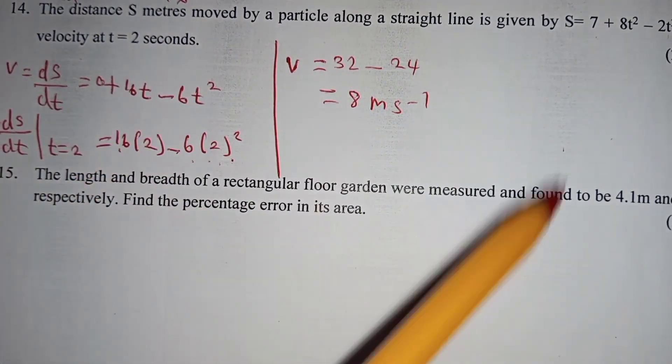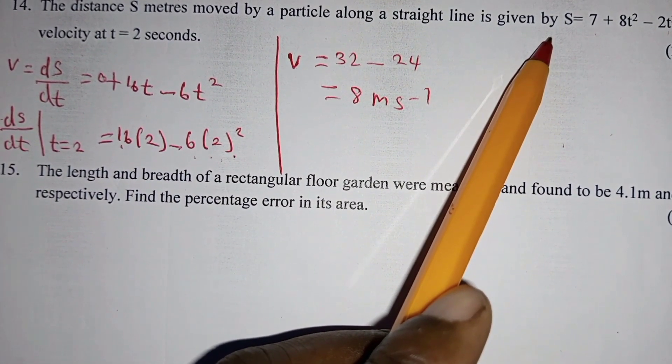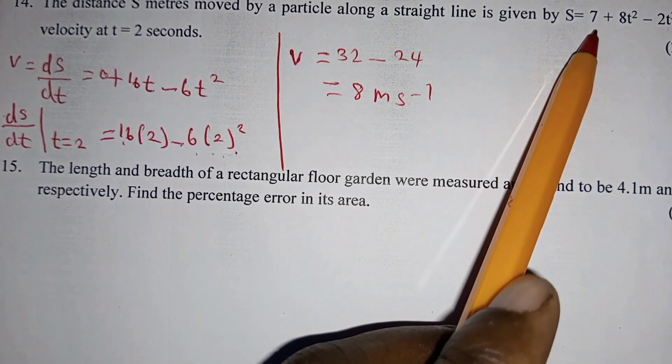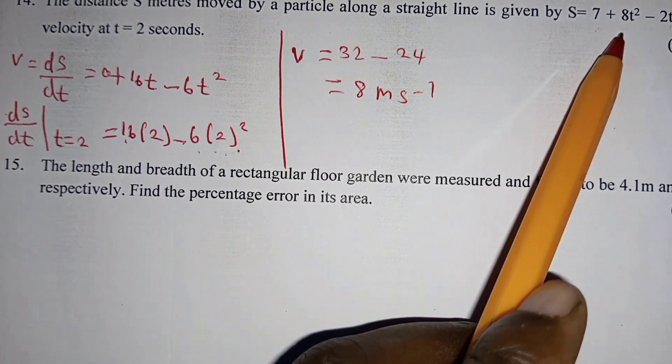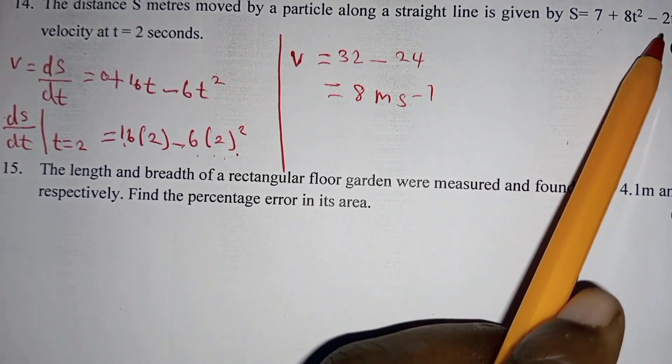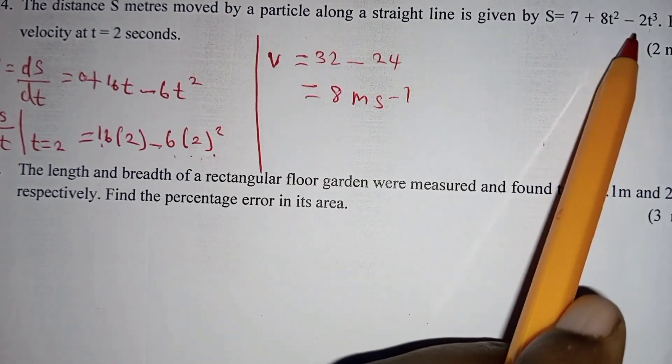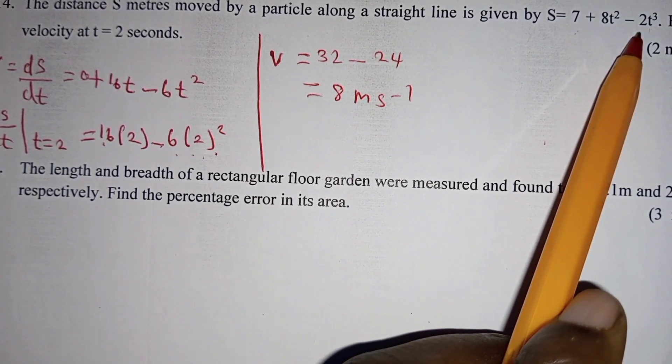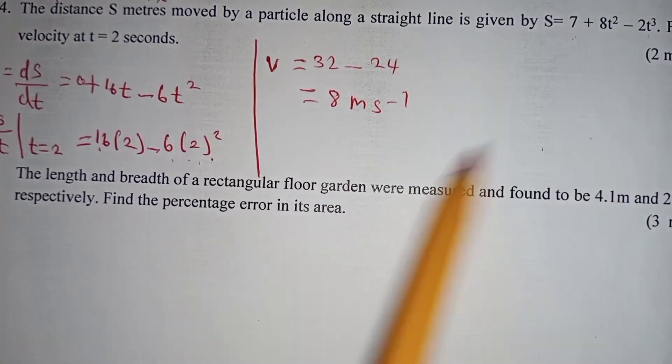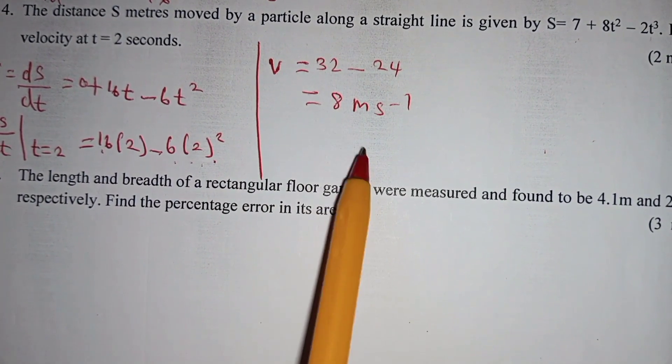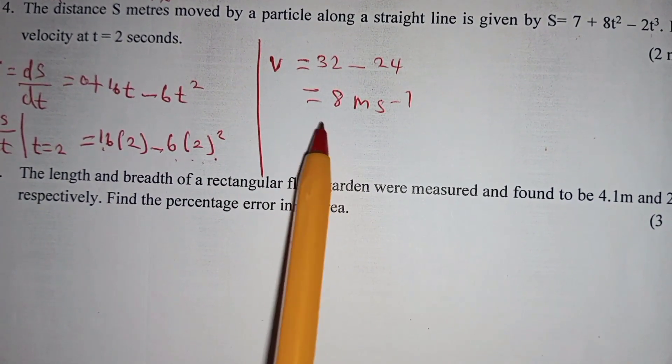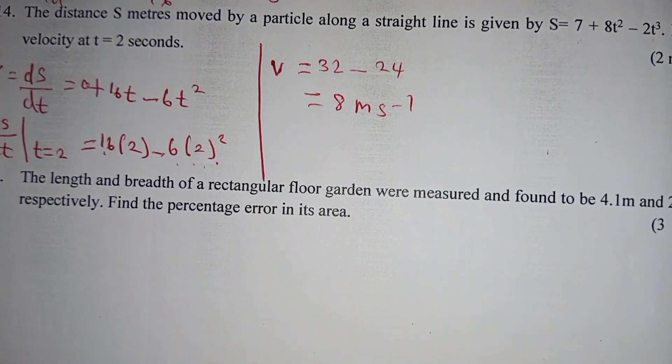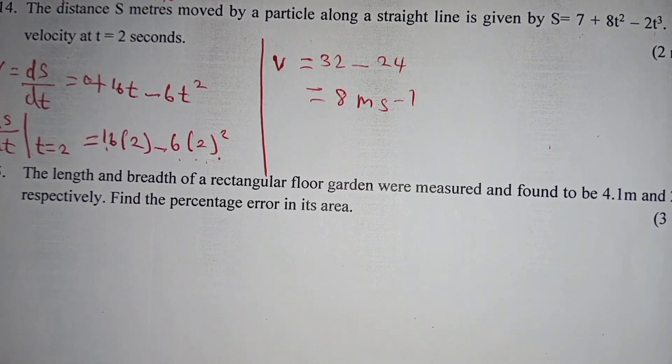What you need to do is to differentiate this equation with respect to time. When you differentiate a constant, the value will be 0. You differentiate 8t squared which will give you 16t. You differentiate this one which will give you negative 6t squared by power rule. Then you substitute these values which are given here and you obtain your answer in this simple method step.